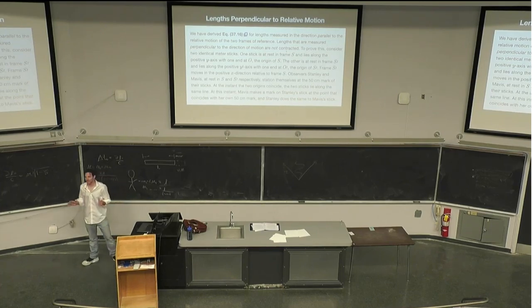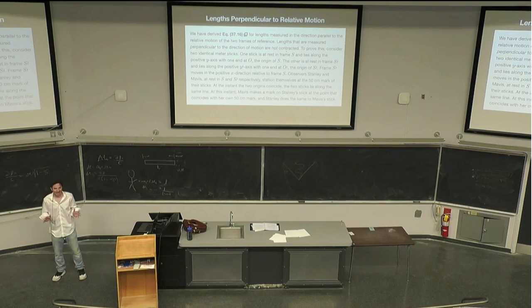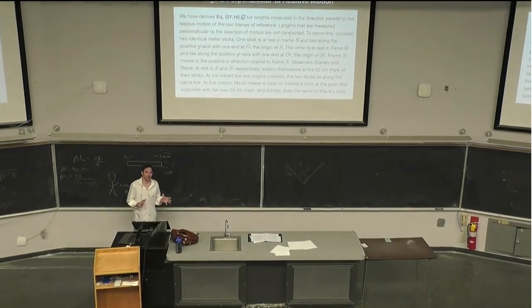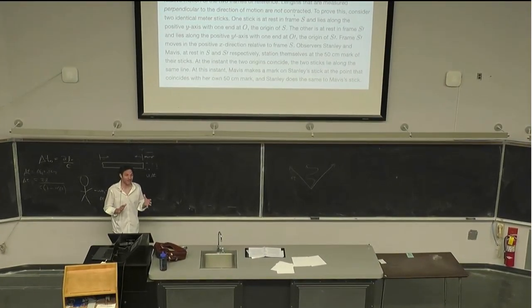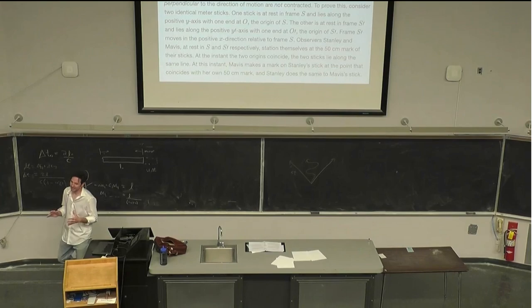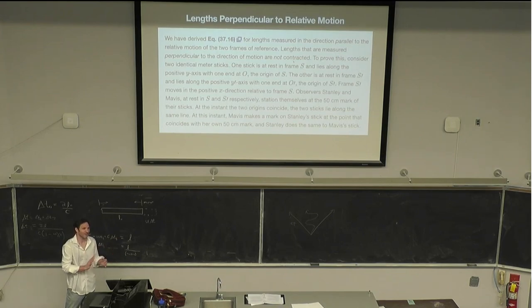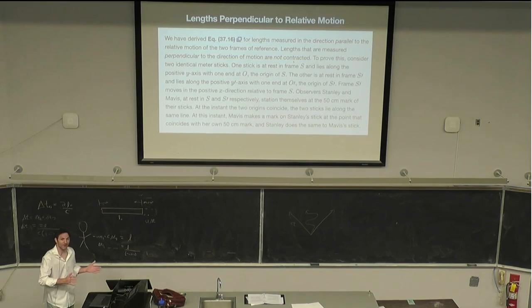So what that means is, remember that the shape of an object has to do with its measurements in three directions and it has a volume. So that means that when you have this contraction, objects don't maintain their same volume. So when you look at somebody and they're traveling at a relativistic speed, they're going to look squished, right? They're going to have a different shape to them. Their volume isn't going to be preserved.